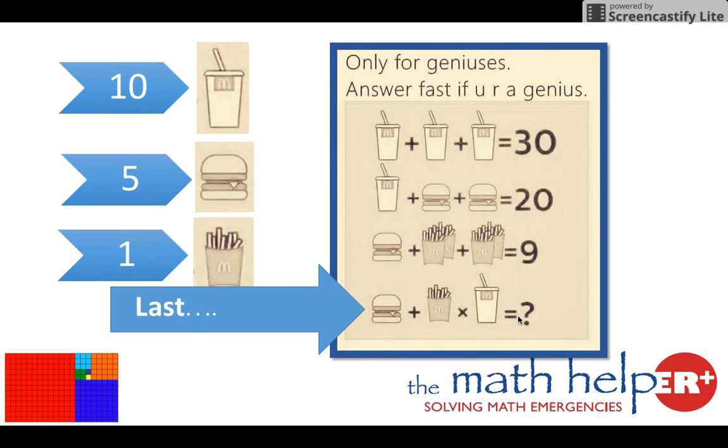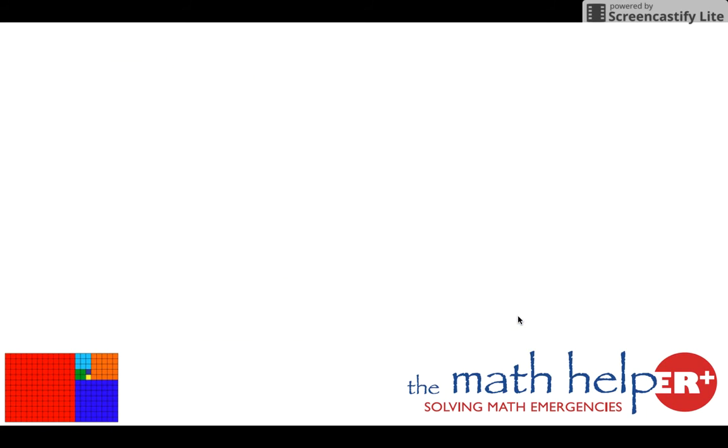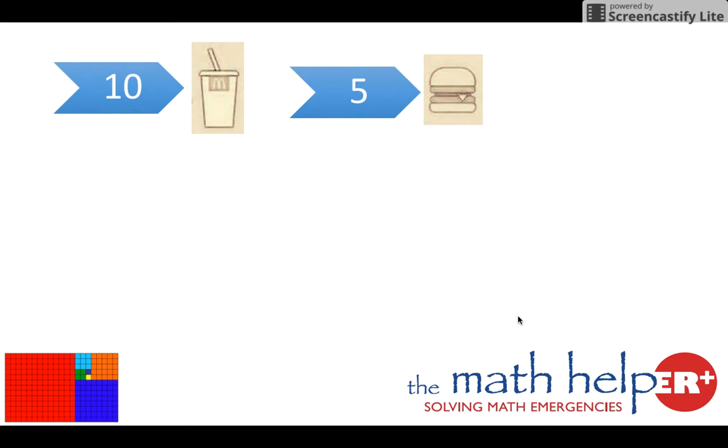Here's what's next. We have a burger, fries, and the soda. So we know the soda is 10. We know the burger is five. Next, we now found out that the fries are one.